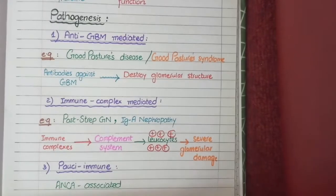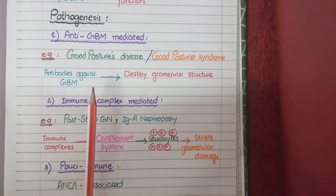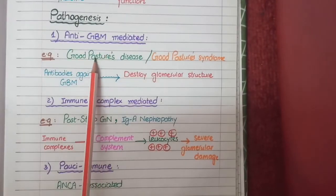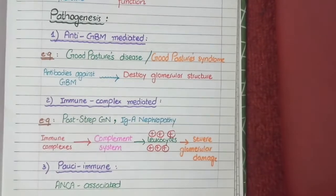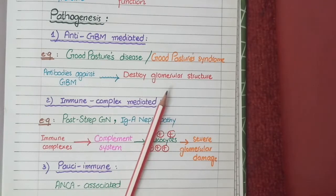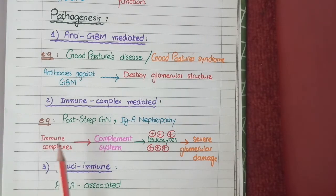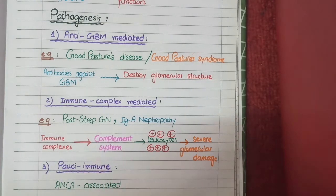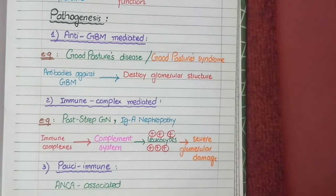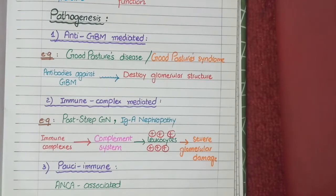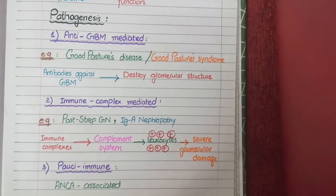To summarize: the first of three categories of rapidly progressive glomerulonephritis is anti-glomerular basement membrane mediated disease such as Goodpasture's disease or Goodpasture syndrome, in which antibodies attack the glomerular basement membrane. The second category is immune complex mediated glomerulonephritis such as post-streptococcal glomerulonephritis, in which leukocytes activated by the complement system cause glomerular damage. The third category is pauci-immune, in which ANCA antibodies cause neutrophilic activation that destroys the glomerular structure.